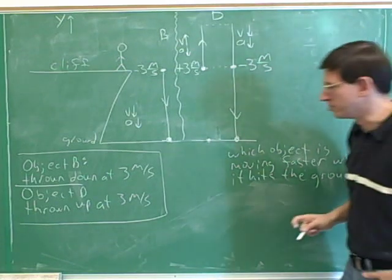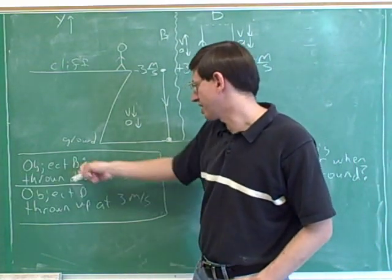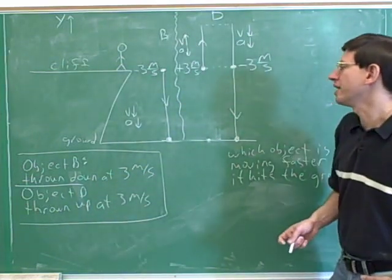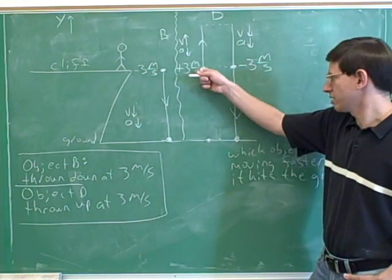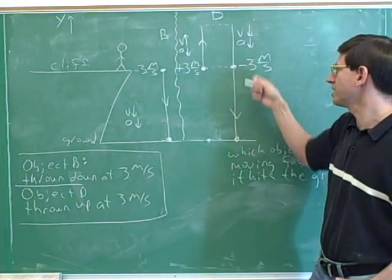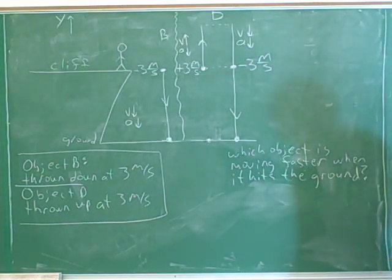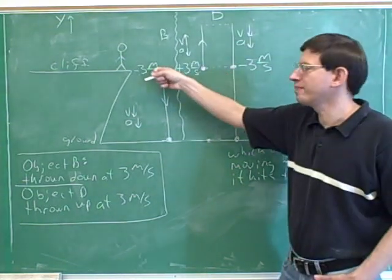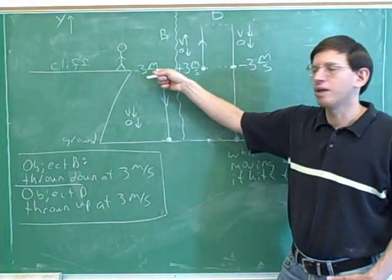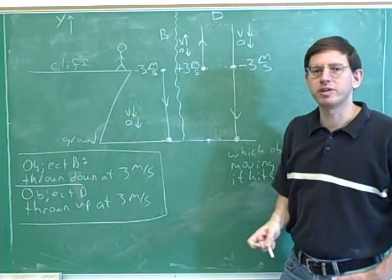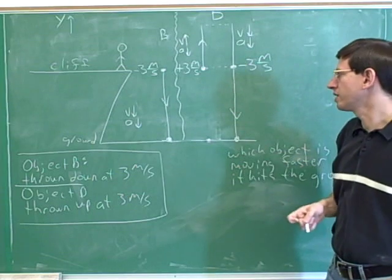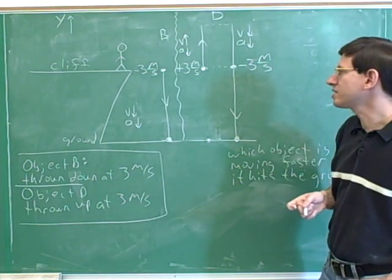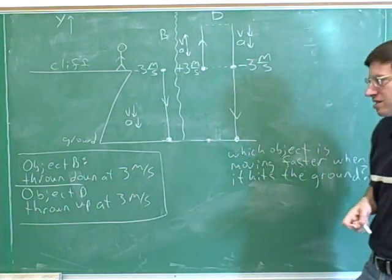Object B was thrown down at three meters per second and object D was thrown up at three meters per second. Object D was thrown up at three meters per second, so when it reaches the same height going down, it's going to be going at negative three meters per second. From this point on, object D is going to be imitating exactly what object B did. Both objects are going negative three meters per second at this height, so we would expect both objects to always have the same velocities at every single point from here on.